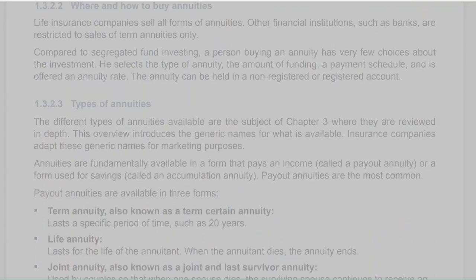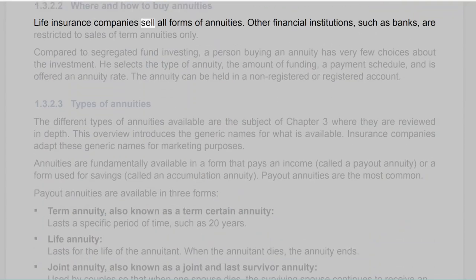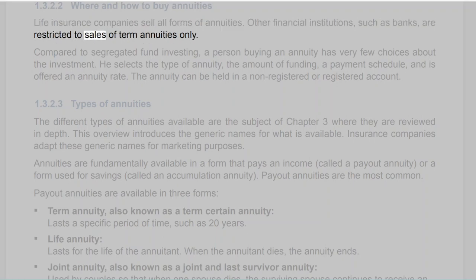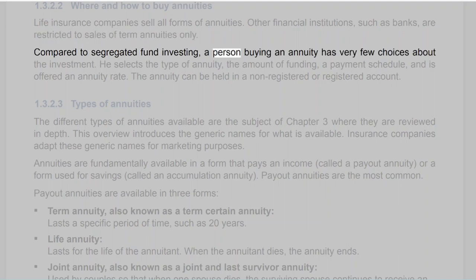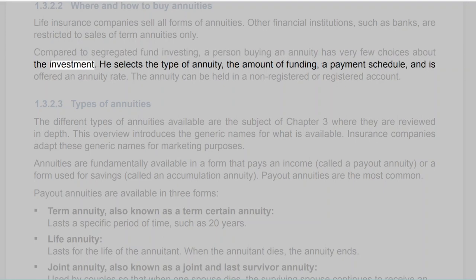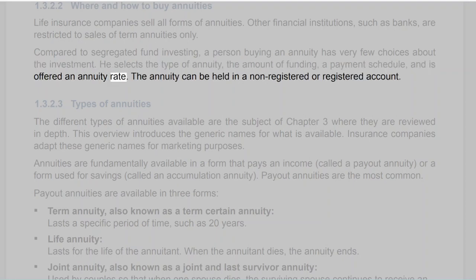Section 1.3.2.2: Where and How to Buy Annuities. Life insurance companies sell all forms of annuities. Other financial institutions such as banks are restricted to sales of term annuities only. Compared to segregated fund investing, a person buying an annuity has very few choices — he selects the type of annuity, the amount of funding, a payment schedule, and is offered an annuity rate. The annuity can be held in a non-registered or registered account.